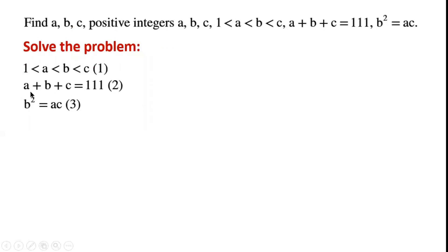We have three variables, two equations, and one inequality. From equation three, we can see that B squared equals A times C, which means that A times C is a perfect square. B squared equals A times C might be a good starting point for solving the problem.